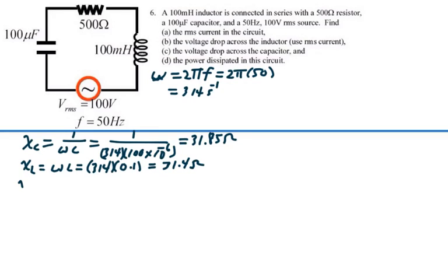So our net reactance, which is our inductive reactance minus our capacitive reactance, is 31.4 minus 31.85, or a negative 0.45 ohms. Not very much net reactance. Almost all the circuit is resistance.